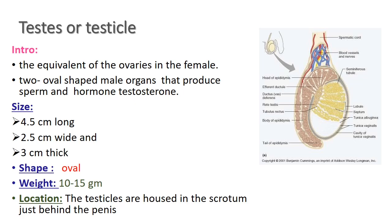Regarding size, the testes are 4.5 cm long, 2.5 cm wide, and 3 cm thick. The shape is oval. The weight is 10 to 15 grams. The location of the testes is inside the scrotum on both sides, just behind the penis.